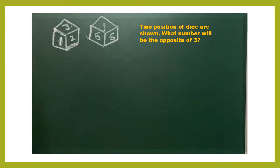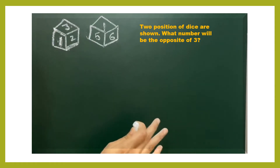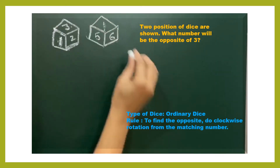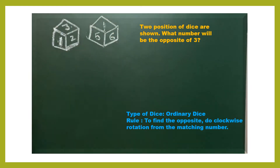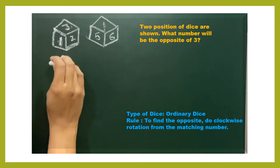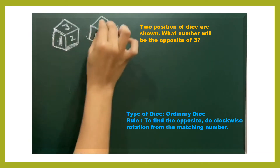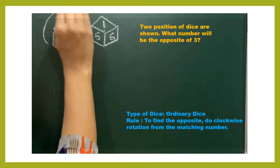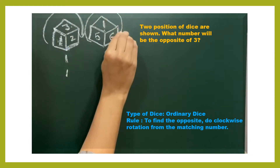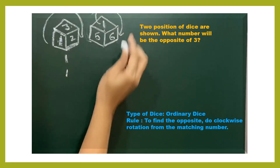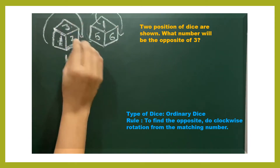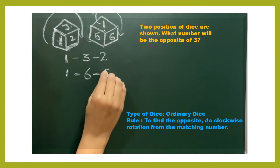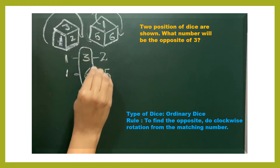What's the opposite of 3? First check whether it's ordinary or standard dice. It's ordinary dice because the sum of two adjacent faces is 7 — 1 plus 6 is 7. Now check which number matches between these two dice: the matching number is 1 in both dice. From this matching number, do clockwise rotation. From 1 it's 3 then 2 in the first die, and from 1 it's 6 then 5 in the second die. So the opposite of 3 is 6.